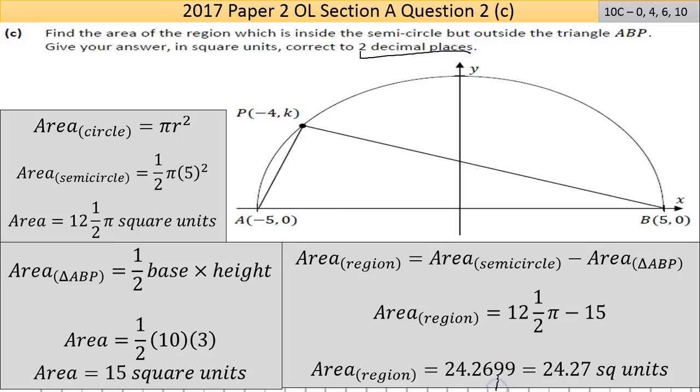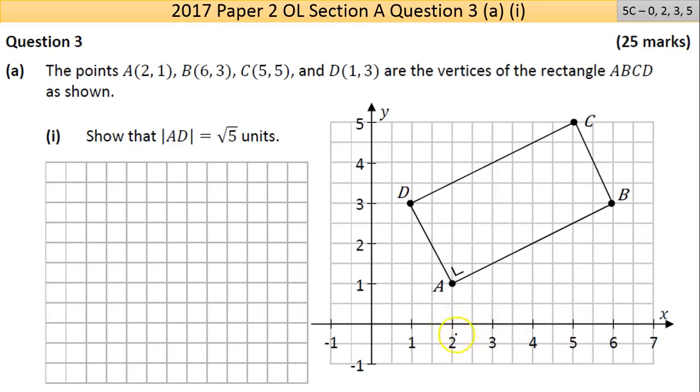The question says to do that to two decimal places, so I look at my nine. The nine is greater than five, so the number prior to it goes up by one, and that's how I get to 24.27. That's very important to always make sure you put your units in. Even though they don't necessarily have units in this question, they do say give your answer in square units. Always go back over the paper at the end and check units - make sure you have them, as it can be worth one or two or three marks, and that can add up. So that's question C. That's question two finished. Thanks very much, and see you on question three.